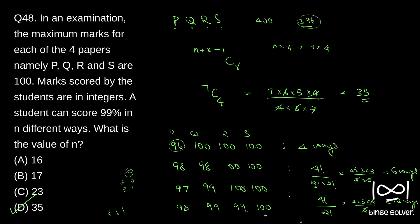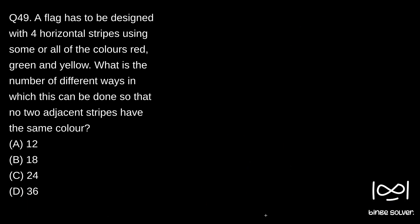Next question, Question 49: A flag has to be designed with four horizontal stripes using some or all of the colors red, green, and yellow. What is the number of different ways in which this can be done so that no two adjacent stripes have the same color?